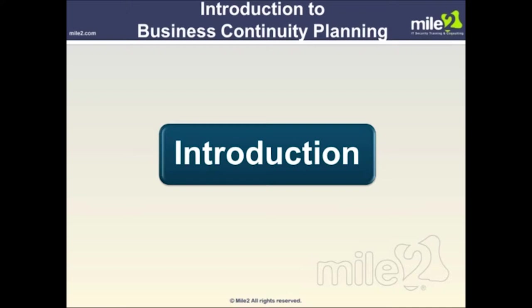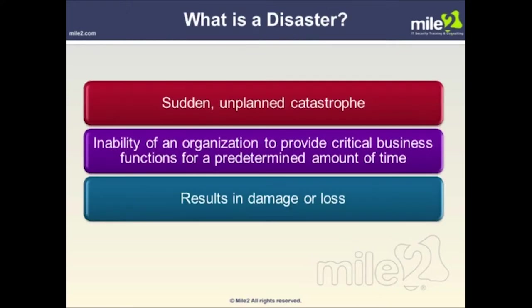Thus, it is important that organizations understand the need to integrate business continuity planning with the security strategy. By strict definition, a disaster is a calamitous event, especially one occurring suddenly and causing great loss of life, damage, or hardship. A disaster can be the result of nature — like floods, severe weather, or earthquakes — or it can be human-induced, in other words, an anthropogenic hazard, such as negligence, errors, crime, or terrorism.